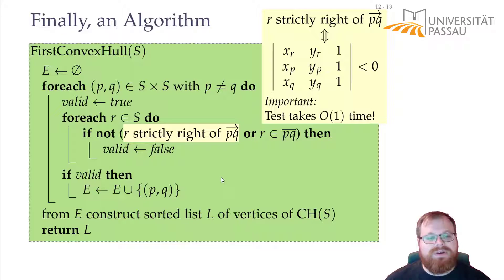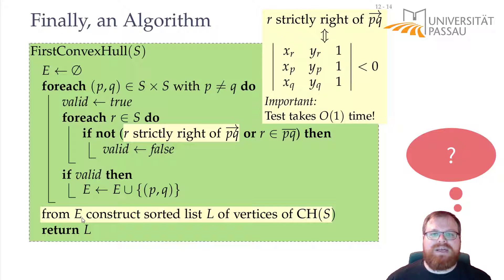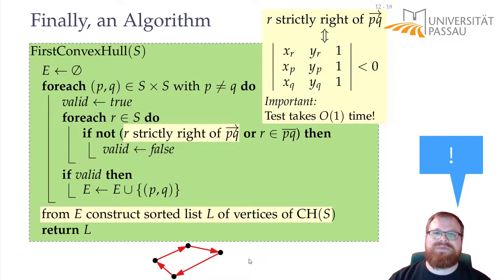The second detail that we should have a look at is, how do we construct the sorted list of vertices from this edge set? We only compute the set of edges, but they are not sorted yet. So how do we do this? We can simply take an arbitrary edge from our edge set and take this as a starting point. We say this is the first edge of our convex hull, and this gives us a target vertex. And from this target vertex, we look in our set of edges, which other edge is there. There must be one outgoing edge of this vertex. And we take this as the next edge, which again gives us a target vertex, from which we look for the next edge. And we do that until we completed the cycle. And the order in which we found the vertices along the way is exactly the order that we want for the description of the convex hull.